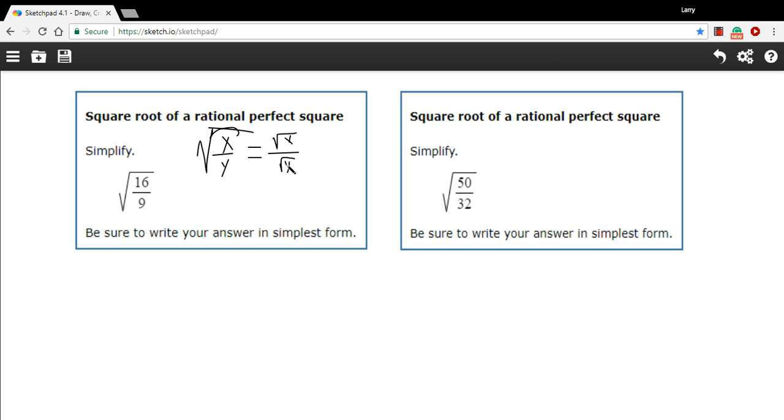So if we do that, we would take the square root of 16, that would equal 4, and then we'd take the square root of 9 and that would equal 3, and we'd have four-thirds as our answer.